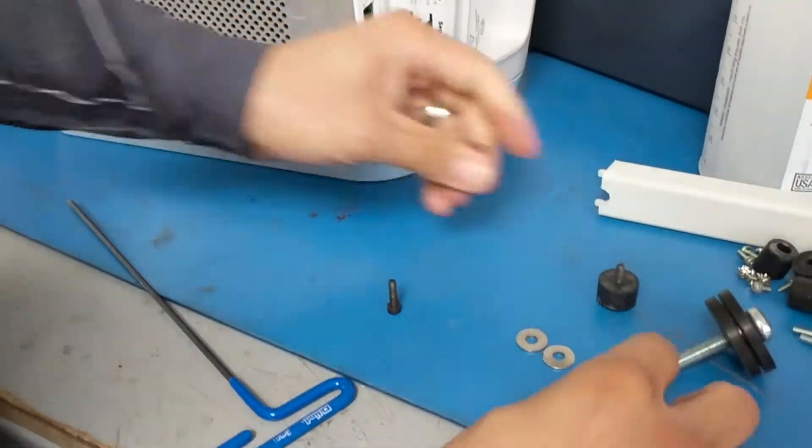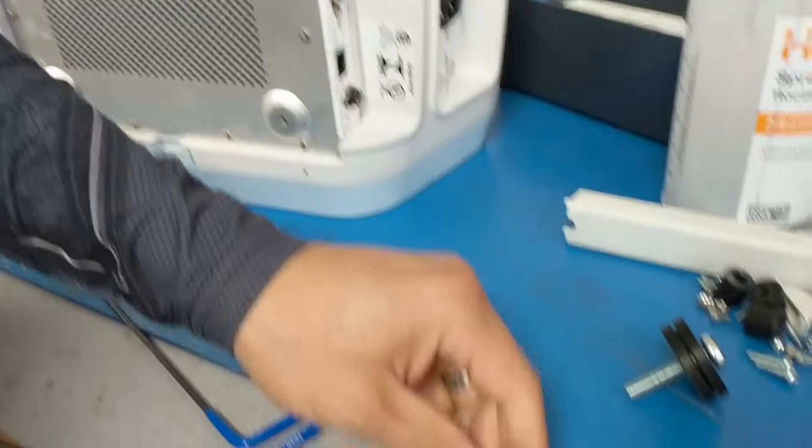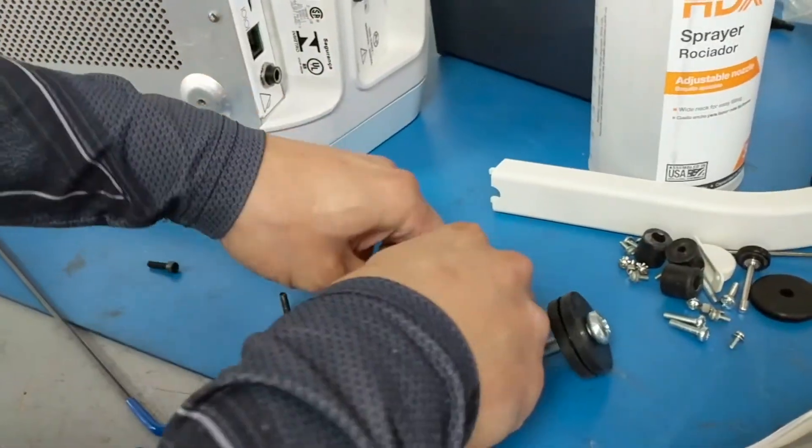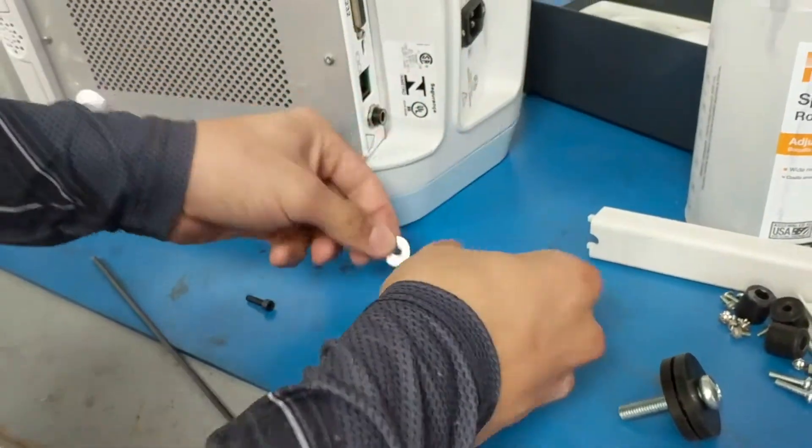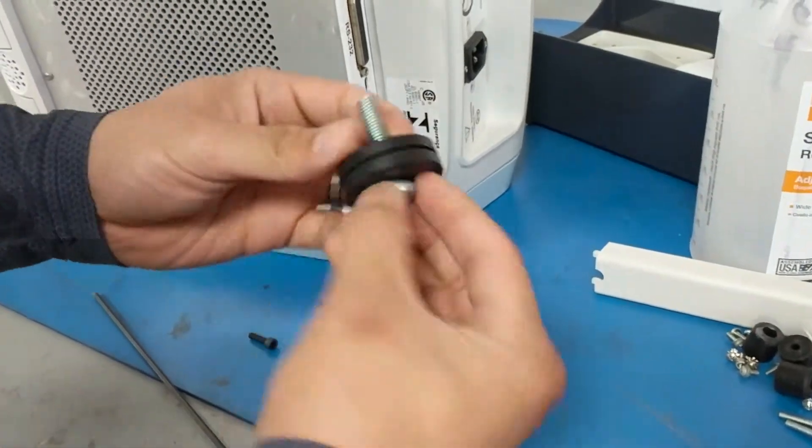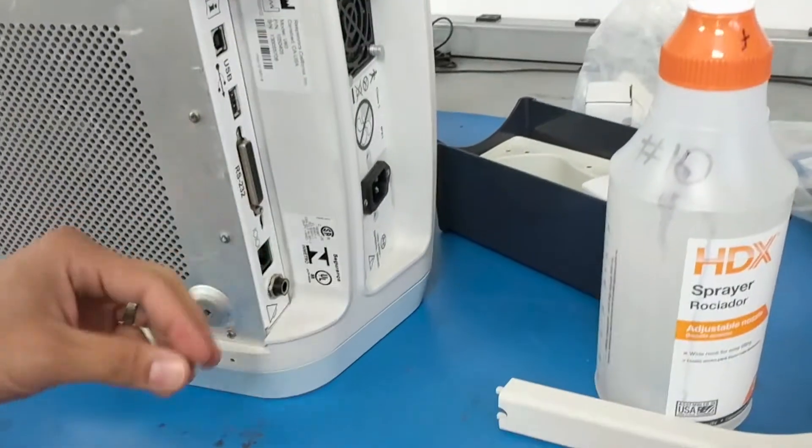Now you will also receive, these are the four we removed, you will receive two washers, right here, and a larger screw, Phillips screw, which is going to go on your cart.